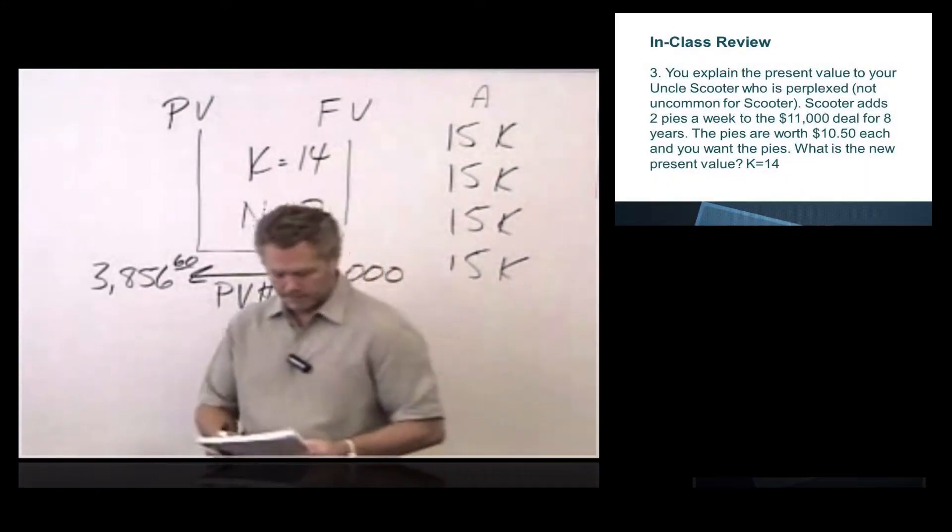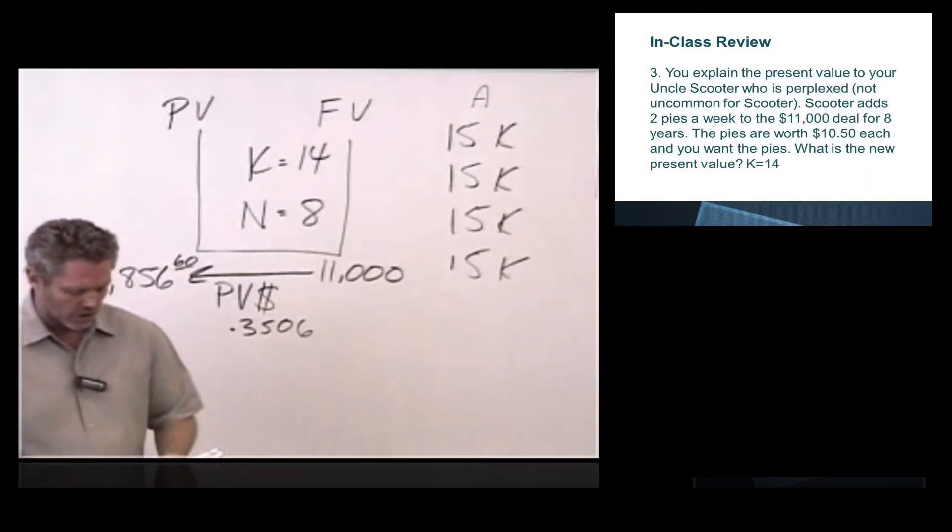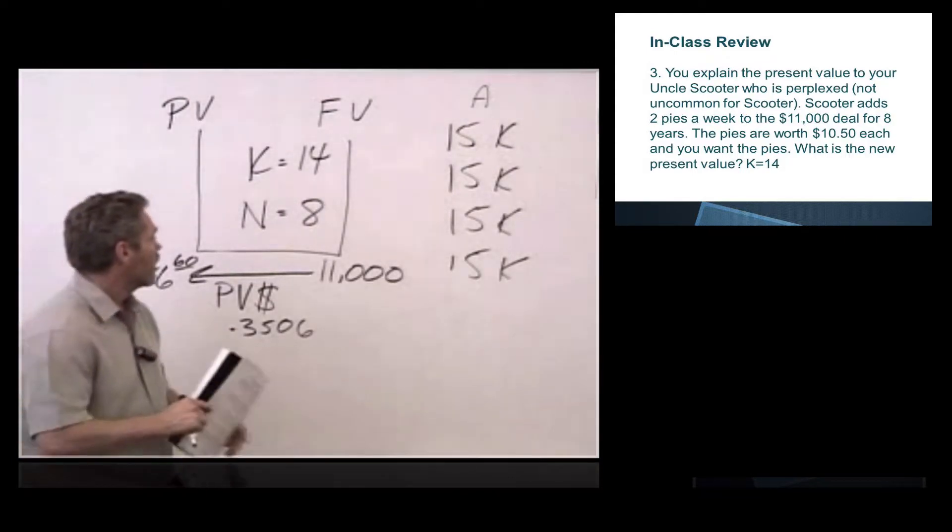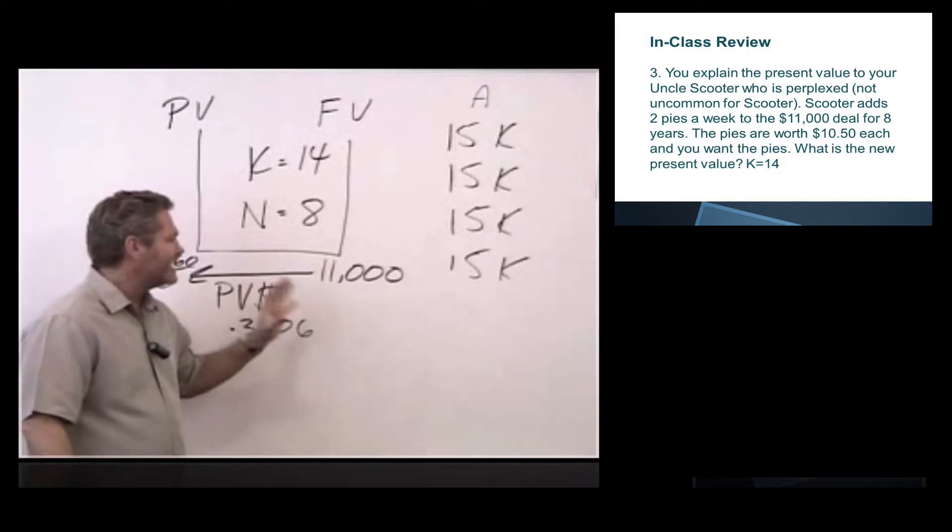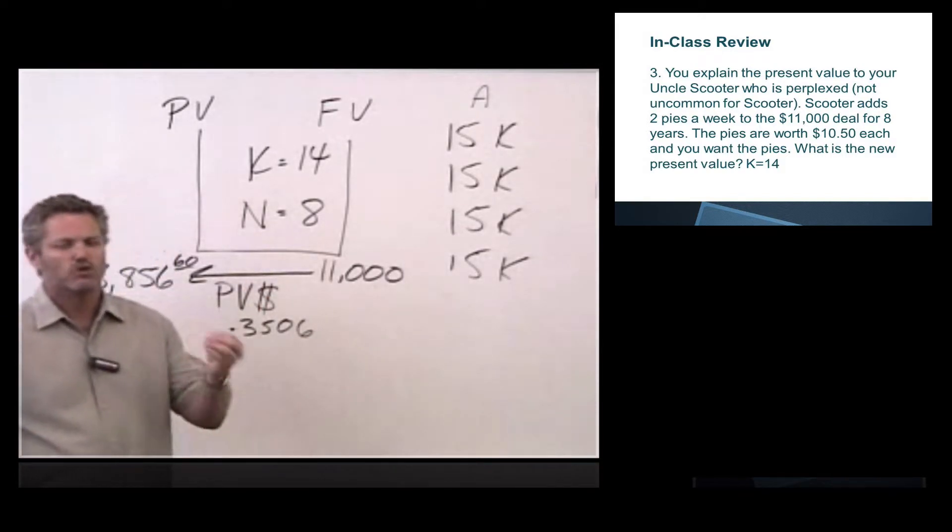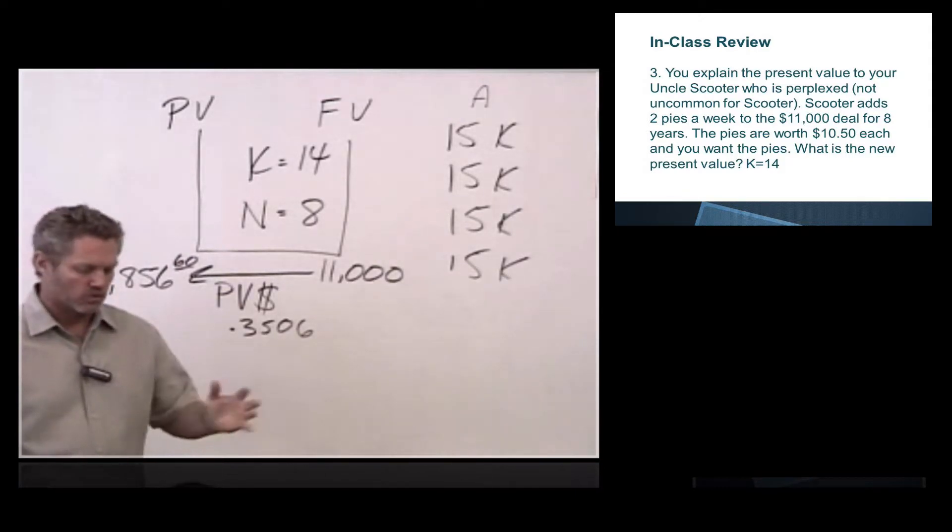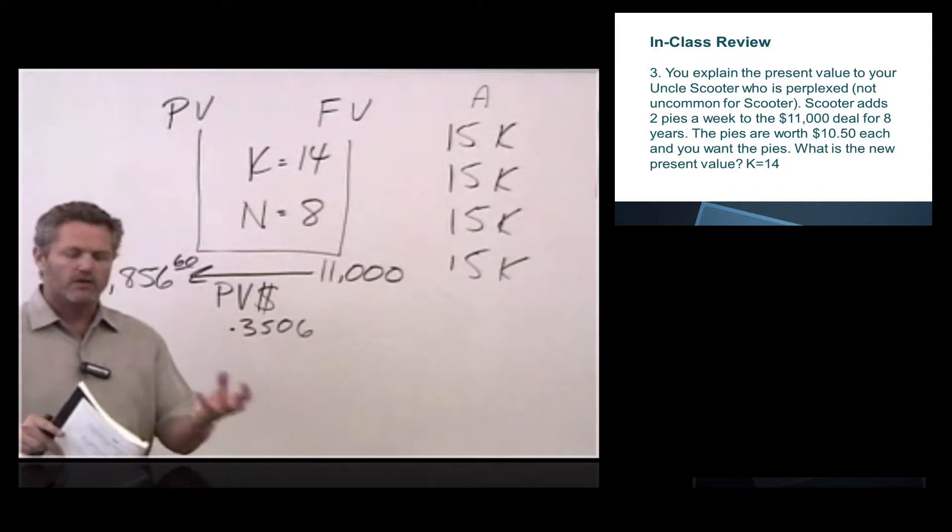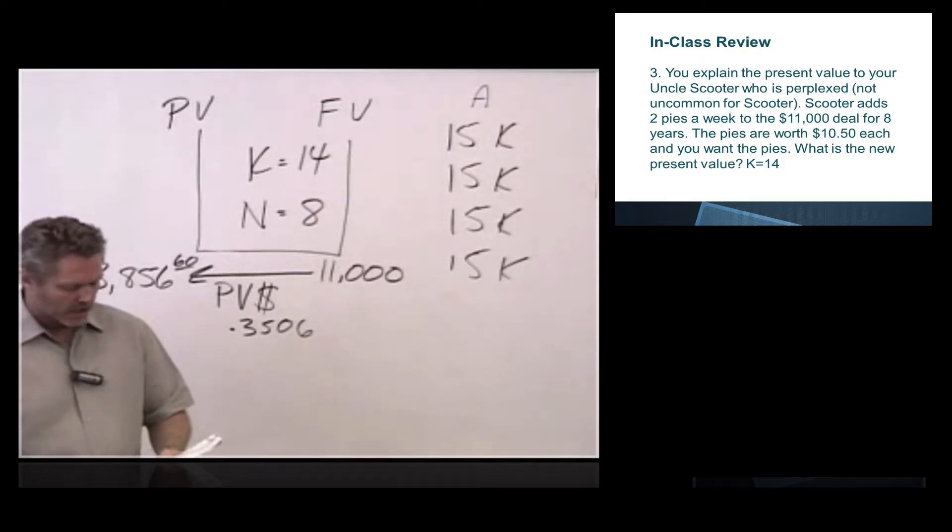So question three, you explain present value to your uncle Scooter, who is perplexed. Not uncommon for Scooter. Scooter adds two pies a week to the $11,000 deal. The pies are worth $10.50, and you want the pies. What's the new present value with K equals 14? All right, so what we're doing here in financial terms is we're adding a sweetener to the deal. A sweetener to the deal is when one party manufactures a product or provides a service that the other side wants.